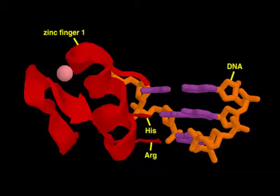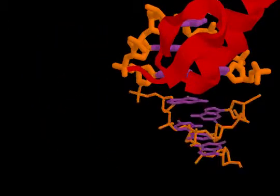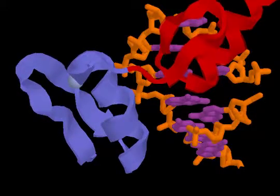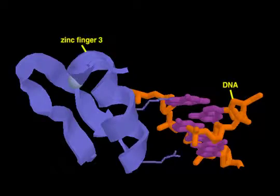The identities of these side chains determine the precise DNA sequence recognized by each zinc finger. Assembling different zinc finger motifs allows precise control over the sequence specificity of the protein.